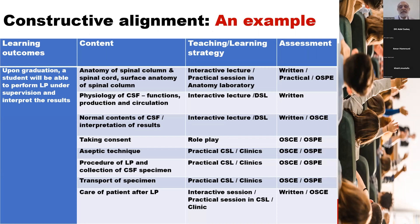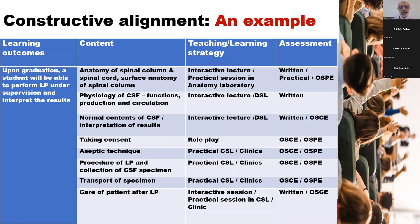Here is an example of constructive alignment. The learning outcome, for example, states that upon graduation, a student will be able to perform lumbar puncture under supervision and interpret the results. The contents are accordingly identified, teaching learning strategies are devised, and assessment methods are decided. For example, taking the content of obtaining consent, the teaching learning strategy would be role play and the assessment would be OSCE. Role play cannot be taught in a lecture and cannot be assessed in written form, so we need to use methods different from lectures and written assessment — and therefore we have chosen role play and OSCE.